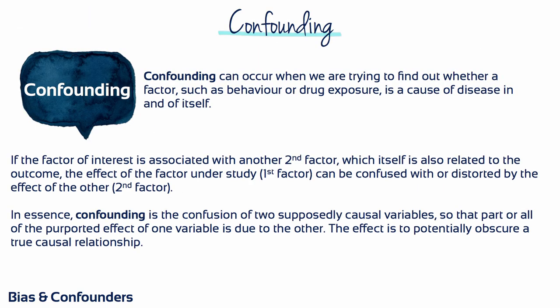Confounding can occur when we're trying to find out whether a factor such as behaviour or drug exposure is a cause of disease in and of itself. If the factor of interest is associated with another second factor, which itself is also related to the outcome, the effect of the factor under study can be confused with or distorted by the effect of the second factor. In essence, confounding is the confusion of two supposedly causal variables, so that part or all of the purported effect of one variable is due to the other.